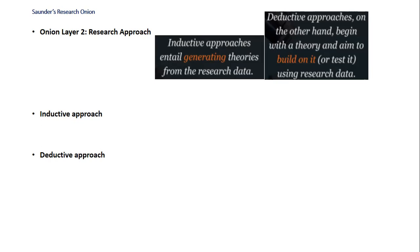In a deductive approach, on the other hand, it begins with a theory and aims to build or test it through research. A deductive approach would be taken when investigating changes in the physical properties of animals over time, which would likely relate to the theory of evolution. In other words, the starting point is a well-established, pre-existing body of research.